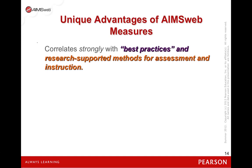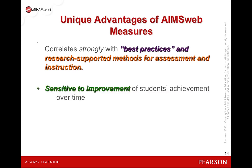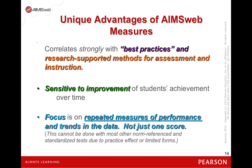There are several unique advantages of using AIMSweb. These are highly correlated with best practices and research-supported methods for assessment and instruction. They're sensitive to small improvement, and they focus on repeated measures of performance and trends in the data. We never look at just one score — we make decisions off of three or four or five scores that show us a trend over time.